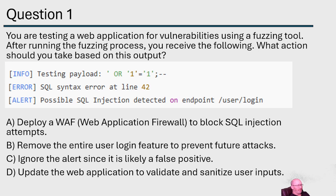Option B: remove the entire user login feature to prevent future attacks. Why would we ever remove the login feature? That's trying to play on the alert about SQL injection detected on the user login endpoint — we're not going to do that. Option C: ignore the alert since it is likely a false positive. Usually when we get feedback from a tool, it's not a false positive. We actually see the apostrophe and 'or 1 equals 1' in the data — that's SQL written all over it.